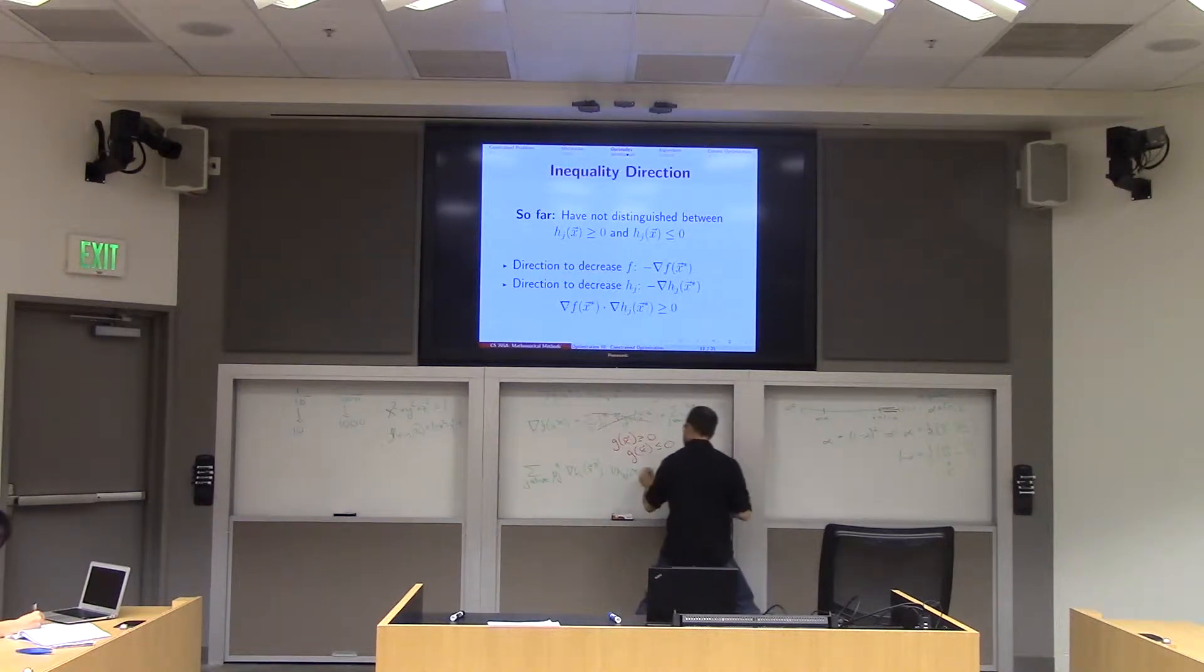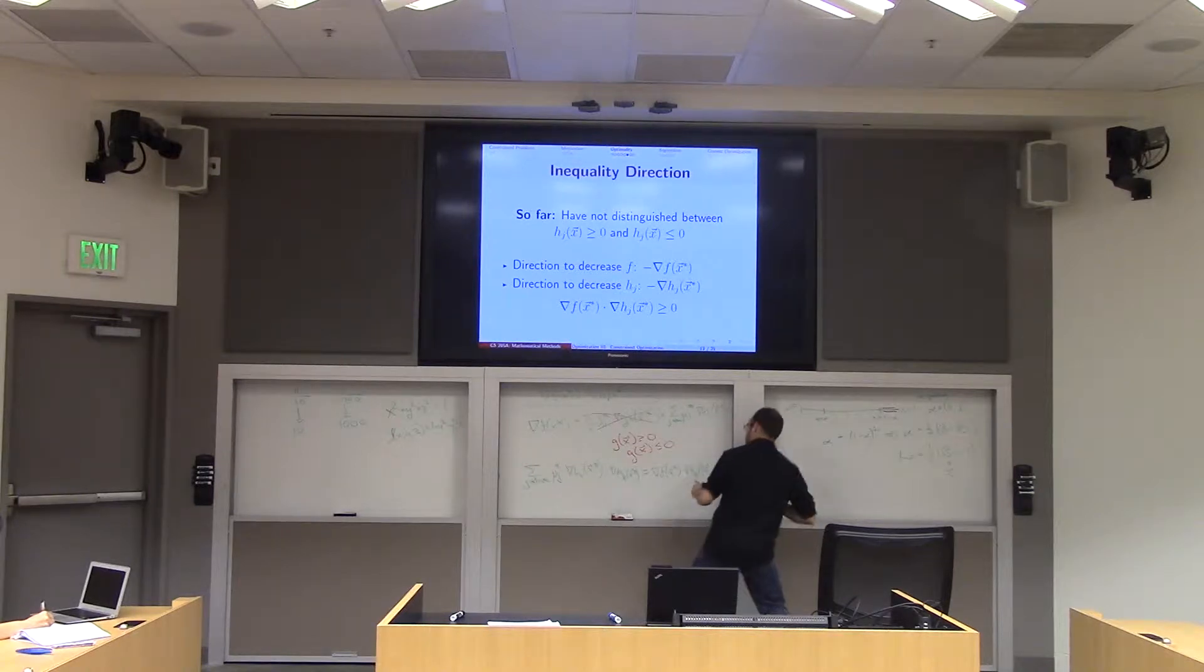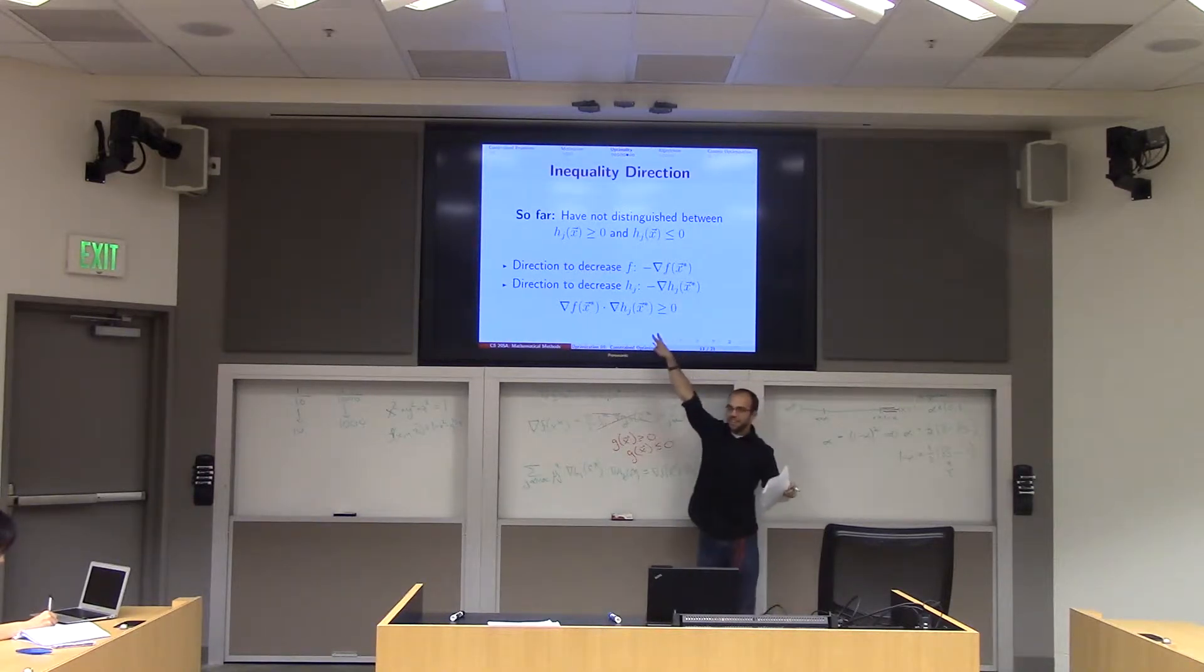And what is h going to equal? Well, h is going to equal the gradient of f at x star dot the gradient of h_k to x star. Yeah? Well, look what we just did. This number is greater than or equal to 0.